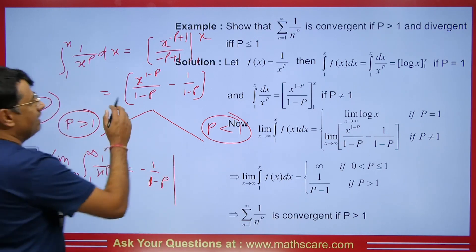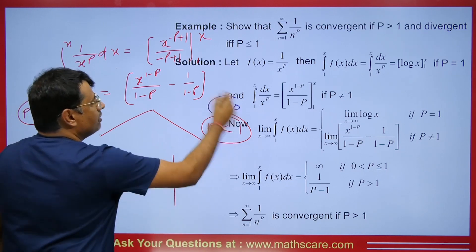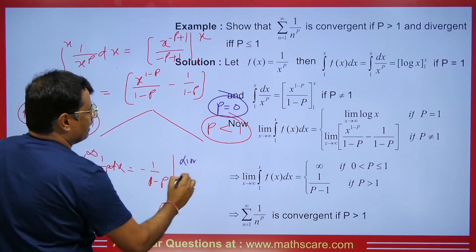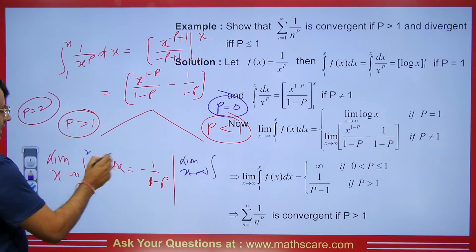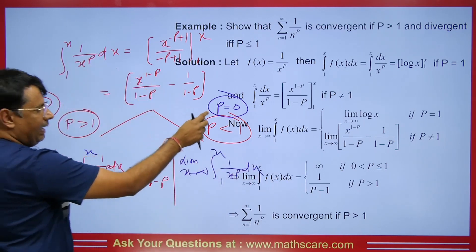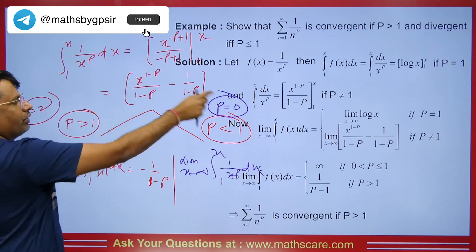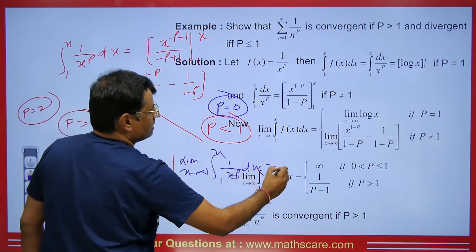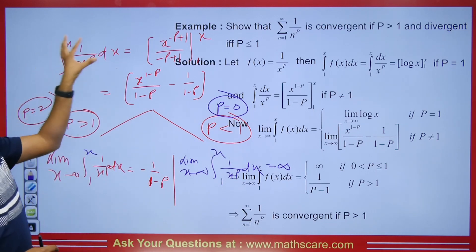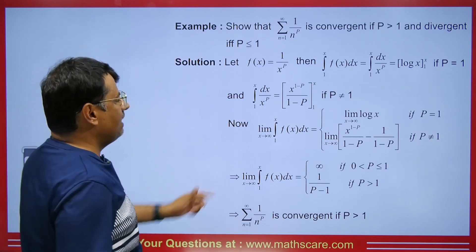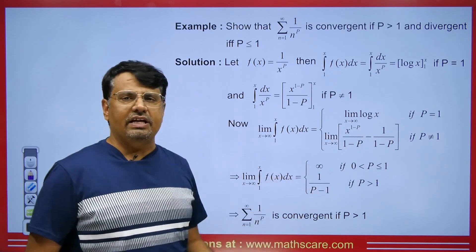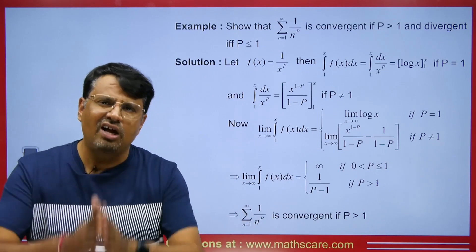For the second case, if p is less than 1, let's put p=0. Then x comes on top, and when we take the limit as x tends to infinity, we get x, which goes to infinity. So when p is less than 1, the series is divergent, and when p is greater than 1, it is convergent. This way we can prove the P-series test: for values greater than 1 it will be convergent, while for the rest it will be divergent.